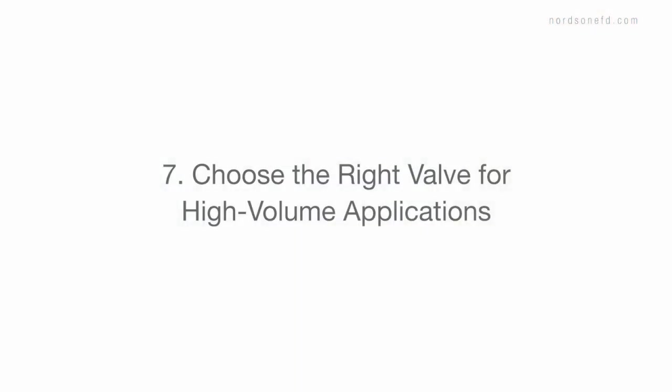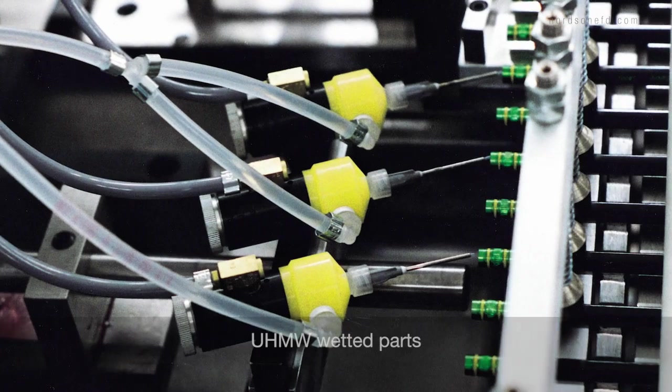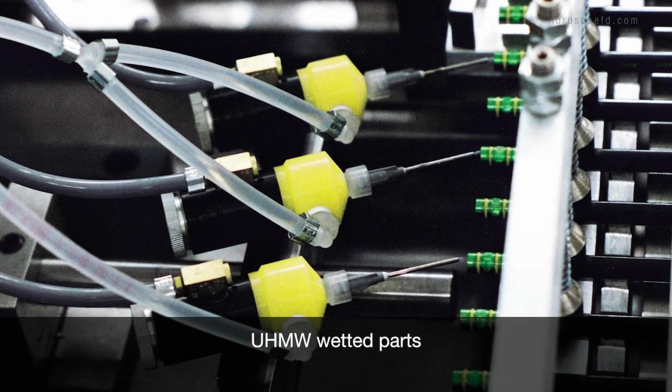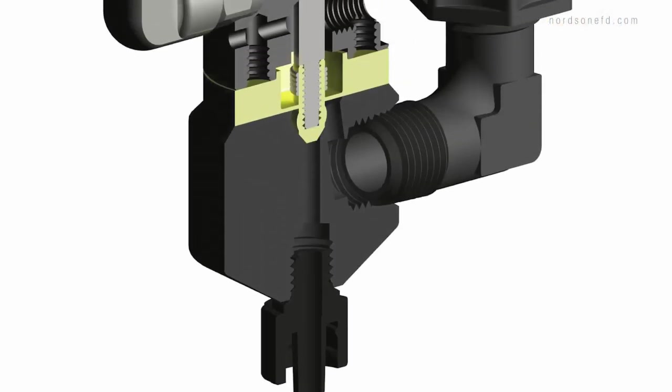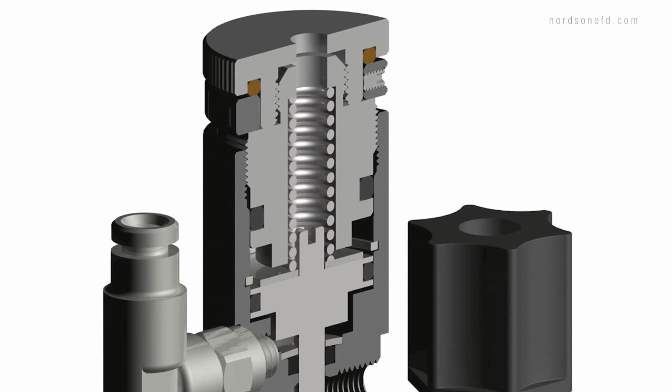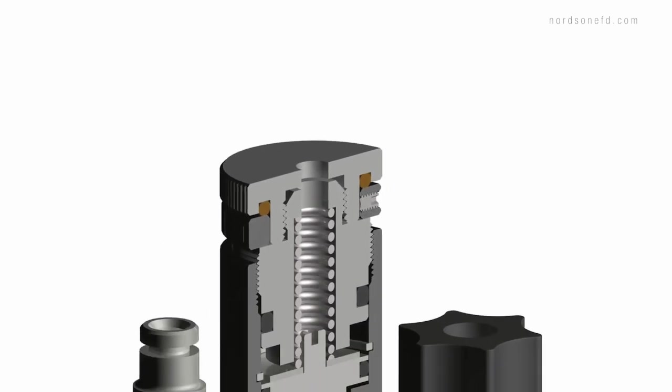Seventh, choose the right valve for high volume applications. Look for valves with wetted parts made from ultra-high molecular weight polyethylene. This stops CA from curing inside your valve and will give you millions of trouble-free dispensing cycles.